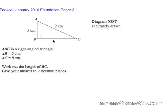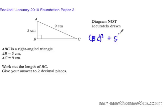We are going to look at finding the length BC. To do this, in the right angle triangle we can use Pythagoras' theorem, which means BC squared plus 5 squared equals the hypotenuse 9 squared.